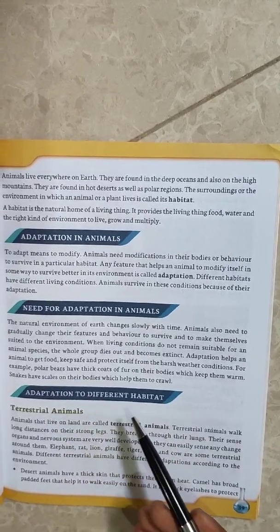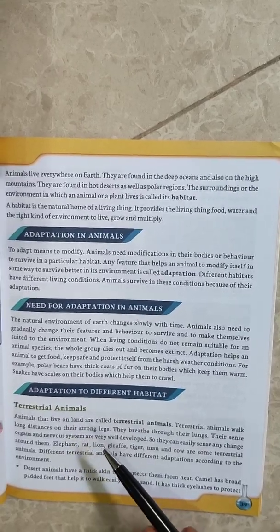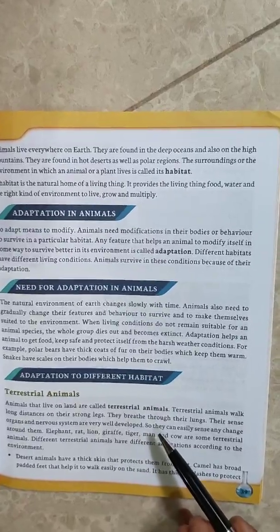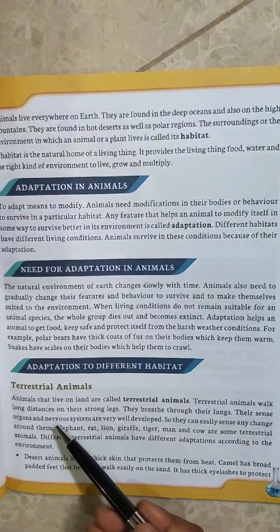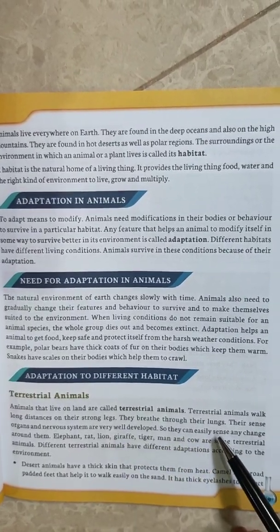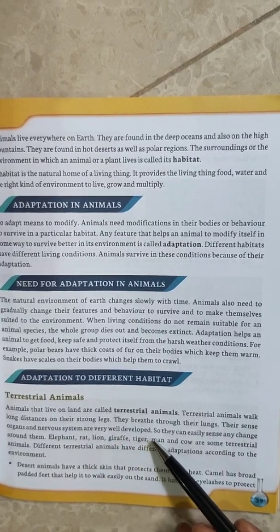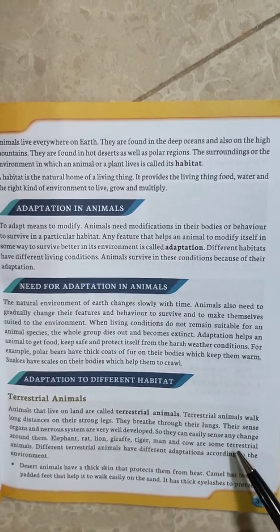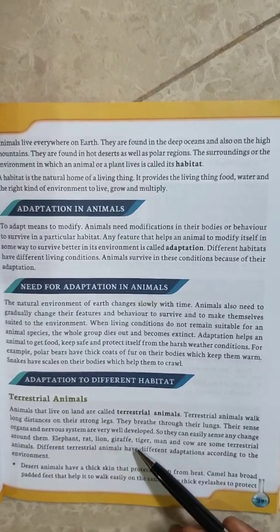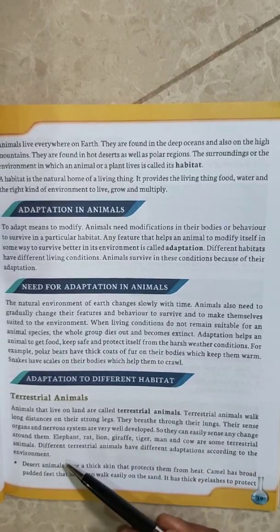Adaptation to Different Habitats — the first one is Terrestrial Animals. Animals that live on land are called Terrestrial Animals. Terrestrial animals walk long distances on their strong legs, they breathe through their lungs, and their sense organs and nervous system are very well developed, so they can easily sense any change around them. Elephant, Rat, Lion, Giraffe, Tiger, Man and Cow are some Terrestrial Animals.